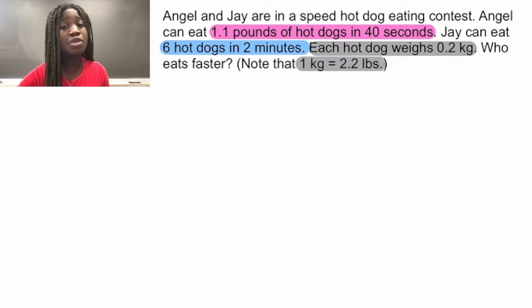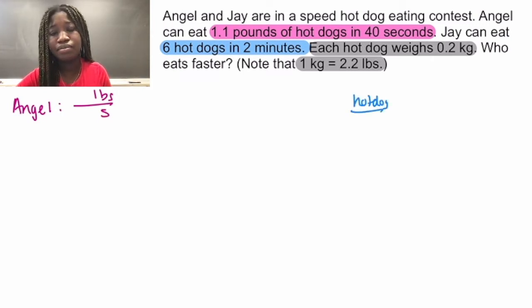Now, in order to compare the two, the units of these rates need to be the same. So let's start with Angel. Right now Angel is in units of pounds per second. We need to get to hot dogs per minute. So we're going to be doing some conversions in between.